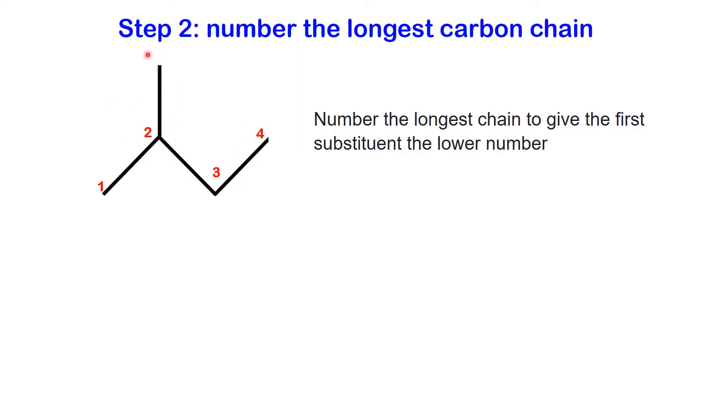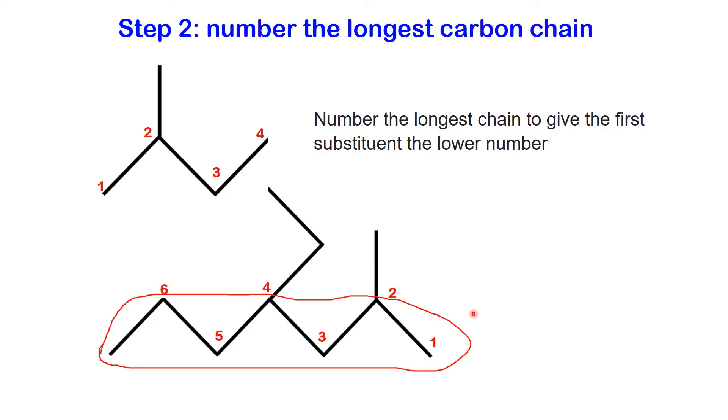Let's explore another molecule. In this case we're identifying the longest continuous carbon chain, which happens to be a straight one. When numbering this chain, we must assign the lower number to the first substituent, so the numbering must start from the right.